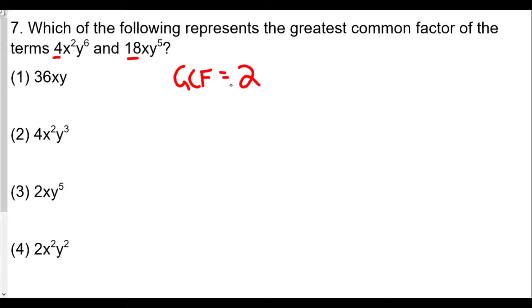Next is the x value and we're looking for the one with the smaller variable. We have x² but this x is to the first power so it will be x. For GCF, the variable with the smaller exponent is the one for the GCF. Finally for y, we have y⁶ and y⁵, so we're going to pick the smaller one y⁵. So 2xy⁵ will divide evenly into both terms and therefore the GCF is going to be choice 3.